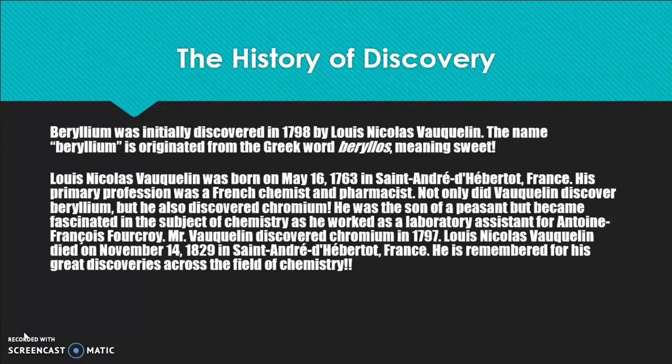He was the son of a peasant, but became fascinated in the subject of chemistry as he worked as a laboratory assistant for Antoine François-Fourcroy. Vauquelin discovered chromium in 1797, and he discovered beryllium in the following year, 1798. He is remembered for his great discoveries across the field of chemistry.